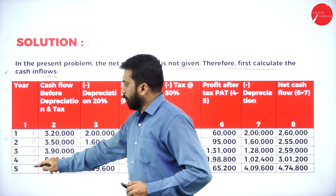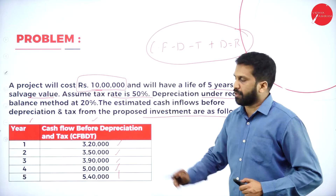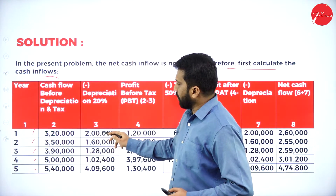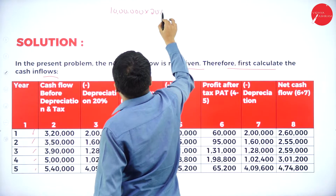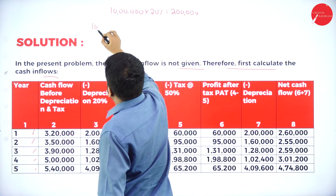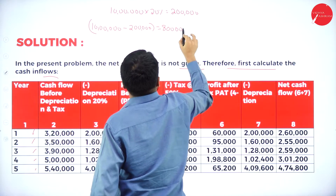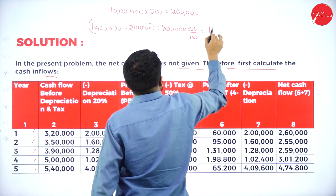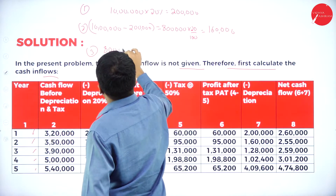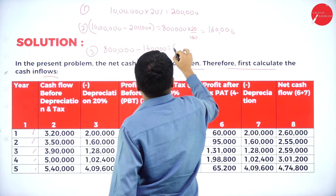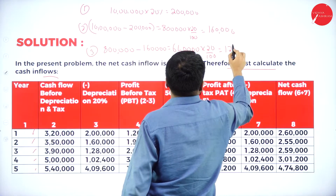The inflows for years one to five are already given. Now calculate depreciation using the reducing balance method. Year 1: 10 lakh at 20 percent = 2 lakh. Year 2: 10 lakh minus 2 lakh = 8 lakh; 8 lakh at 20 percent = 1 lakh 60 thousand. Year 3: 8 lakh minus 1 lakh 60 thousand = 6 lakh 40 thousand; 6 lakh 40 thousand at 20 percent = 1 lakh 28 thousand.